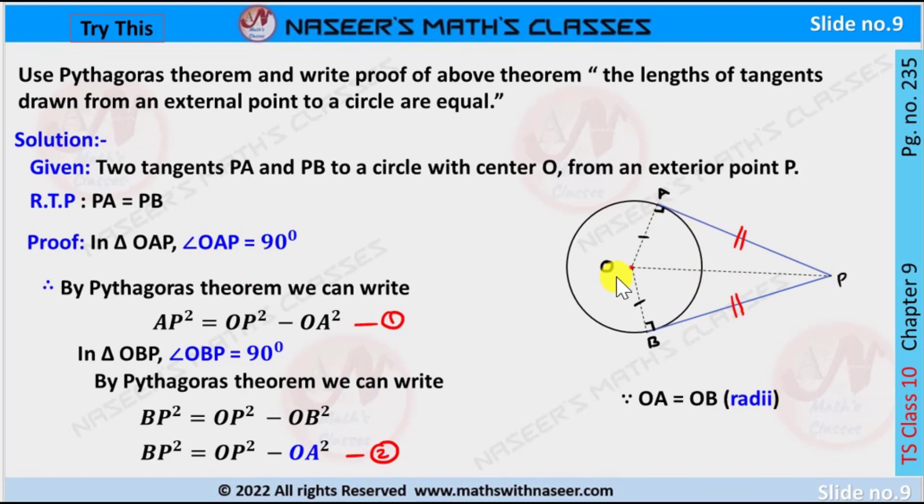Then OP is the hypotenuse. By Pythagoras theorem we can write AP² = OP² - OA². This is equation 1. Next, in triangle OBP, angle OBP is 90 degrees.